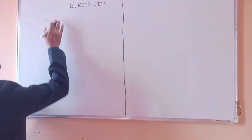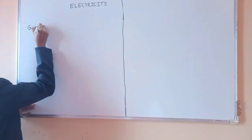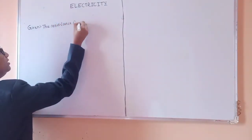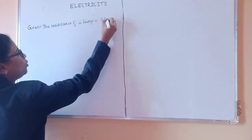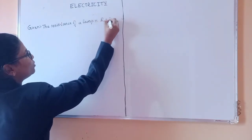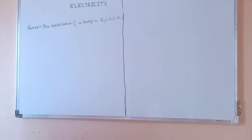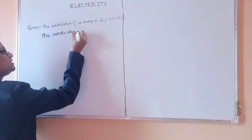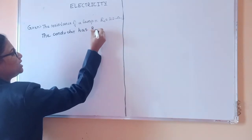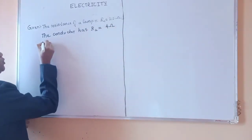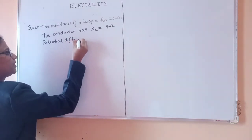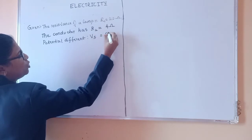Let us write what is given. The given here is: first one, the resistance of a lamp is around 20 ohm which is considered as R1. Next we have the conductor which has resistance R2, that is equal to 4 ohm. Then potential difference of the battery, we can consider this as Vs in a circuit, it is 6 volt.